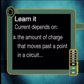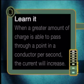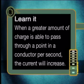The current depends on the amount of charge that moves past a point in a circuit and the rate at which the charge moves past that point. When a greater amount of charge is able to pass through a point in a conductor per second, the current will increase.